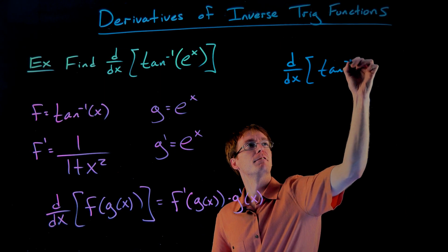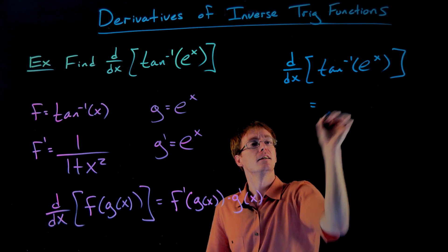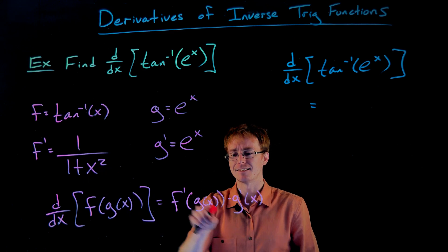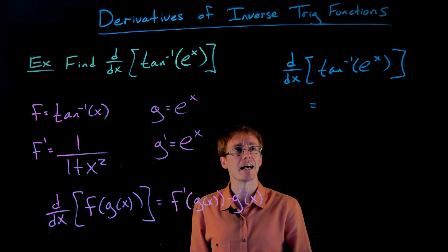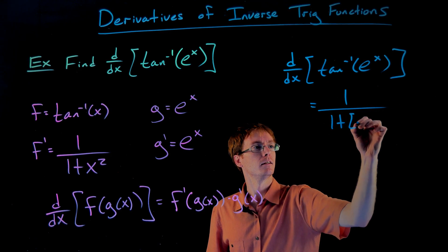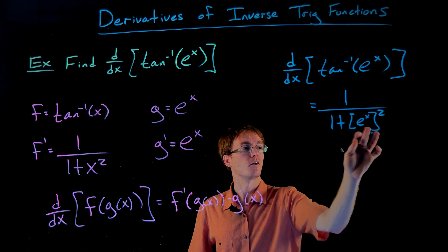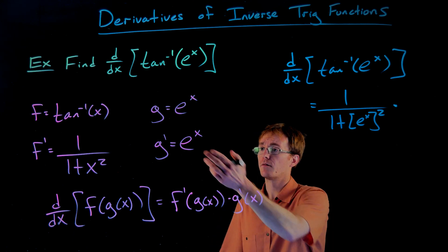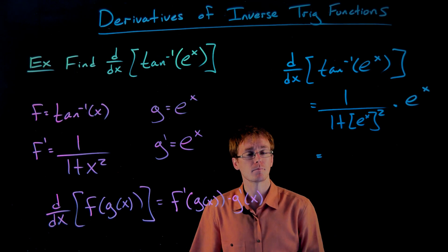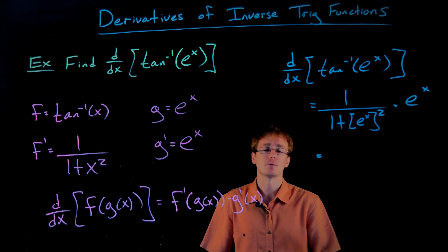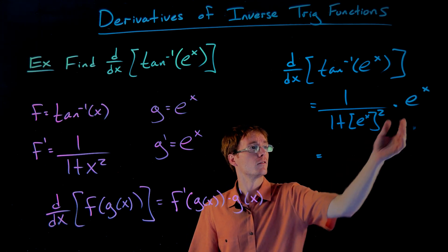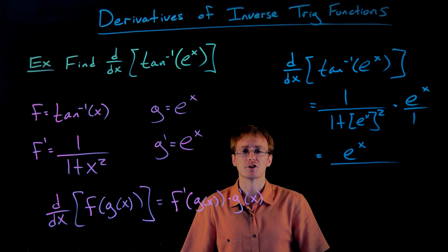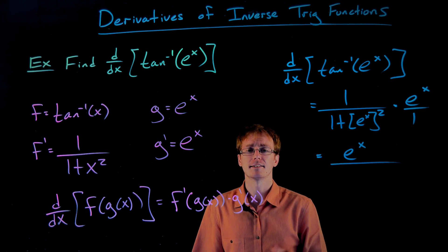So now we have our f, f prime, g, and g prime, and we can put these pieces together. The derivative of tangent inverse of e to the x is: the derivative of our outer function is 1 over 1 plus x squared — but its input is not x, it's g of x, which is e to the x. So we get 1 over 1 plus e to the x, squared. Then we multiply this by g prime of x, which is also e to the x. This is technically our derivative. We can clean it up by writing it as a single fraction with numerator e to the x and denominator 1 plus e to the x squared.